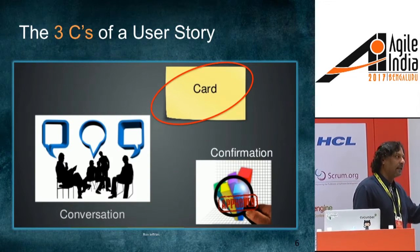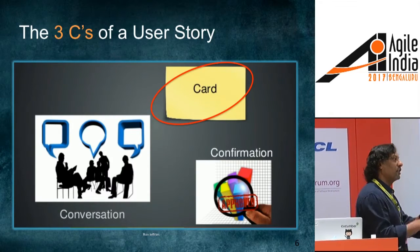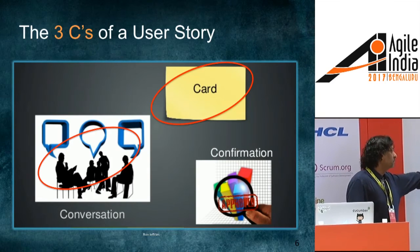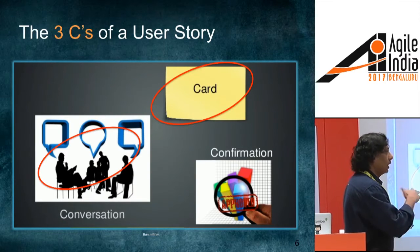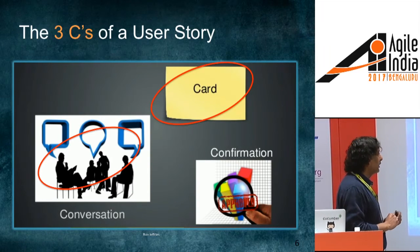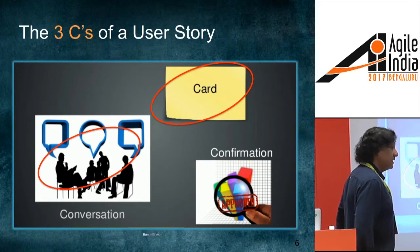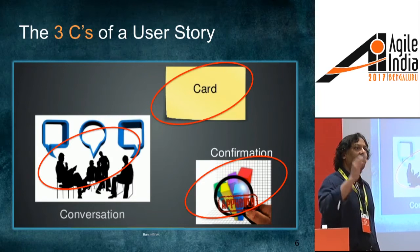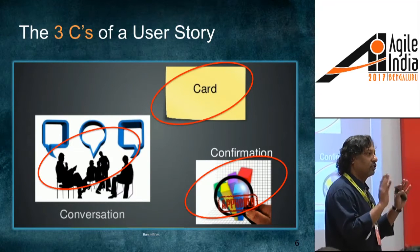The second C is conversation — the real details of what you're trying to build emerge during conversations, and conversations are going to trump all other aspects of trying to jot it down into a format or put it into a Jira tool. The third C, which is often forgotten, is confirmation — every user story should have an unambiguous condition of satisfaction. You need to know what needs to be satisfied to say the story is done.